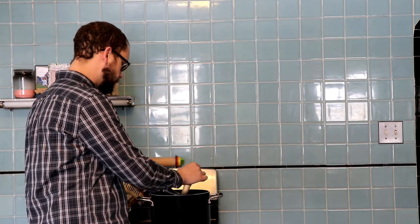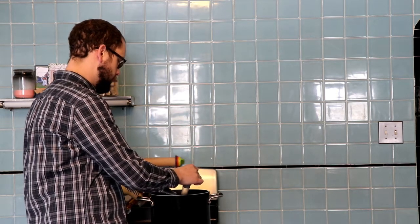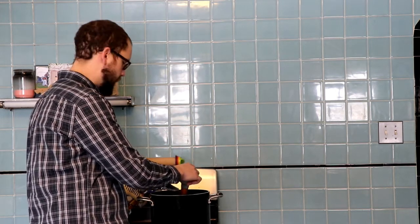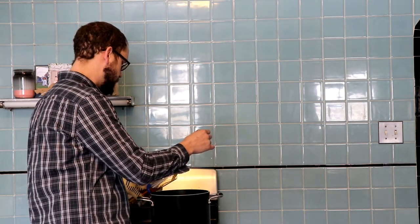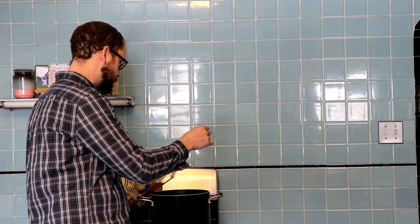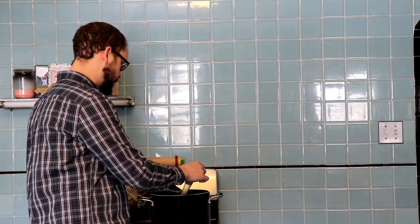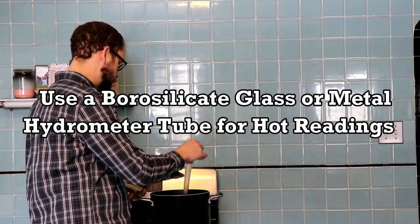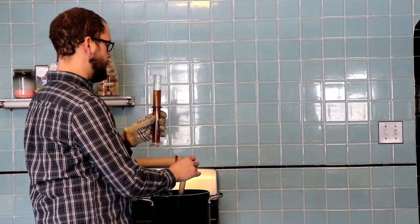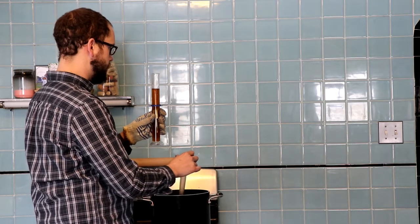And this hydrometer has two lines on it. It has a line for room temperature readings and it has a line for hot readings. And because this is boiling, I'm going to use the hot reading line, which basically puts it about eight degrees brix lower.